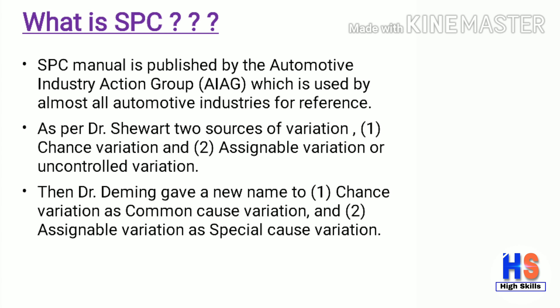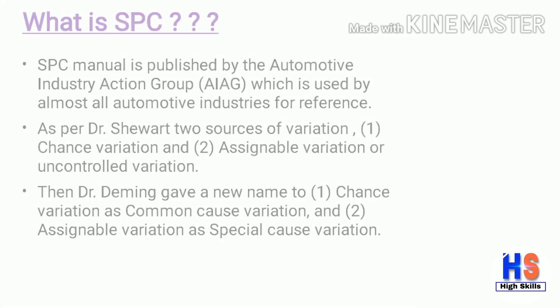As per Dr. Shewhart, two sources of variation exist: first is chance variation and second is assignable variation, also called uncontrolled variation. Then Dr. Deming gave new names — chance variation became common cause variation, and assignable variation became special cause variation.